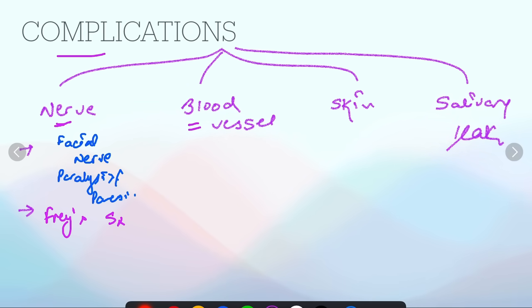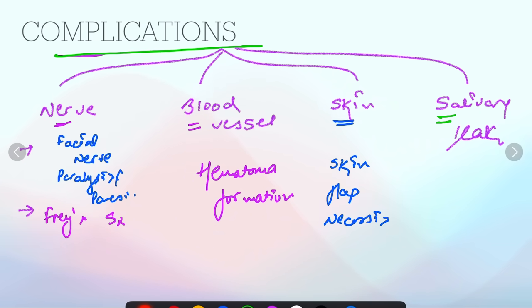For blood vessels, it can lead to hematoma formation from any injury during parotidectomy. For the skin, there can be skin flap necrosis. The complication associated with parotidectomy can also be salivary leak, in which there can be persistent leak of saliva or sialocele formation.